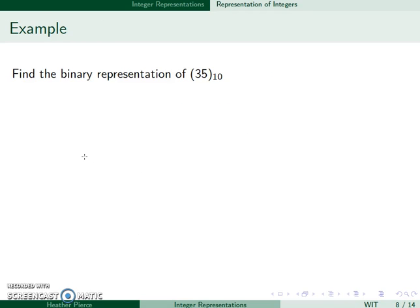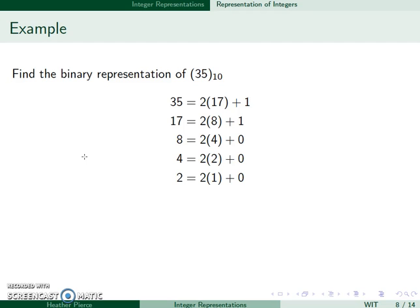For example, I want to find the binary version of 35. I start with dividing 35 by 2, I get 17 with a remainder of 1. 17 divided by 2 is 8 with a remainder of 1. 8 divided by 2 is 4 with a remainder of 0. 4 divided by 2 is 2 with a remainder of 0. 2 divided by 2 is 1 with a remainder of 0. And 1 divided by 2 is 0 with a remainder of 1. So I now have a quotient of 0.